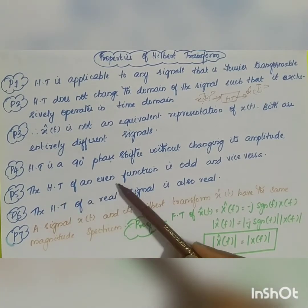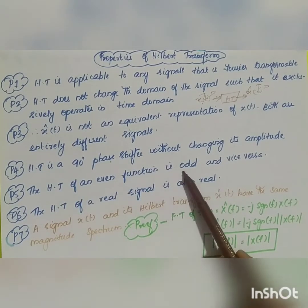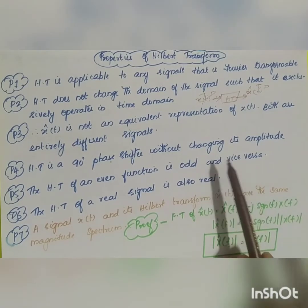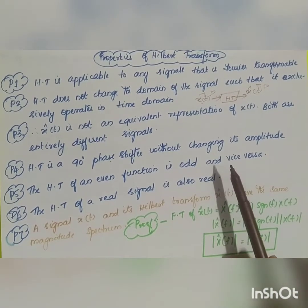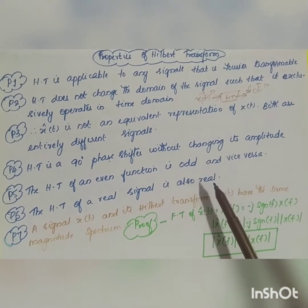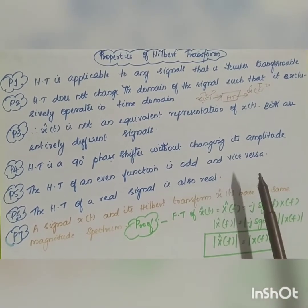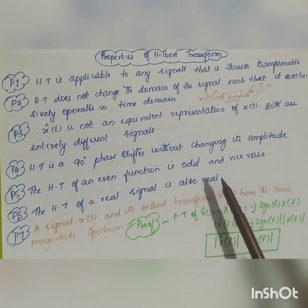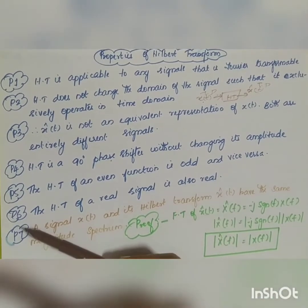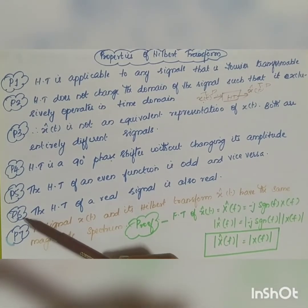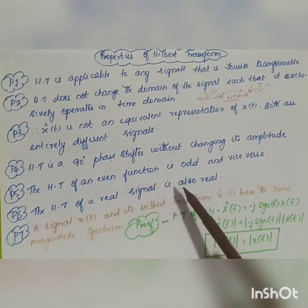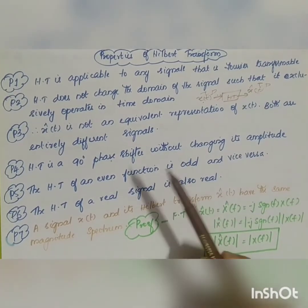The fifth property is that the Hilbert transform of an even function is an odd function and vice versa. For example, a cosine signal will be changed into a sine signal. Similarly, the sixth property is that the Hilbert transform of a real signal is also real.